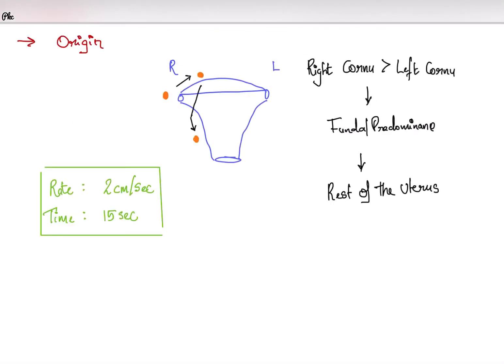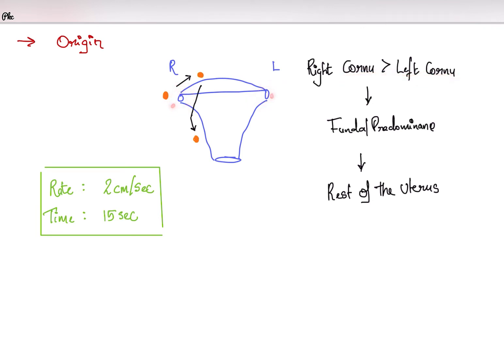Next I am going to talk about the origin of uterine contractions. Uterine contractions take origin from the corner of the uterus — both the left and right corner. Usually it takes its origin from the right corner first and then the left corner.